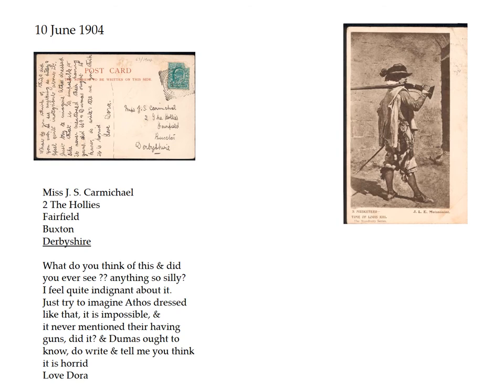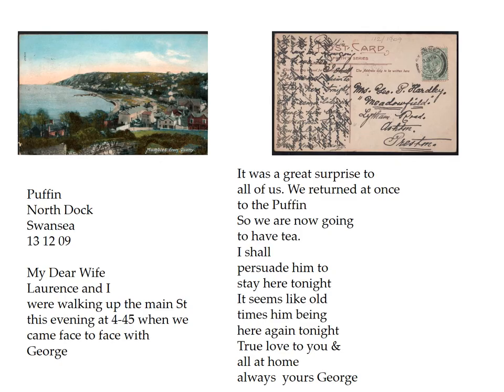Picture postcards were so common in every genre that it was quite typical for cards to be exchanged that referred to popular culture — you could find bishops, actresses, cricketers, any kind of star of the day. Here, Dora seems to rather misunderstand what The Three Musketeers means. Her message says: 'What do you think of this? Did you ever see anything so silly? Just try to imagine Athos dressed like that. It is impossible. And it never mentioned their having guns, did it?' So it's rather amusing that she's mistaken what a musketeer might mean.